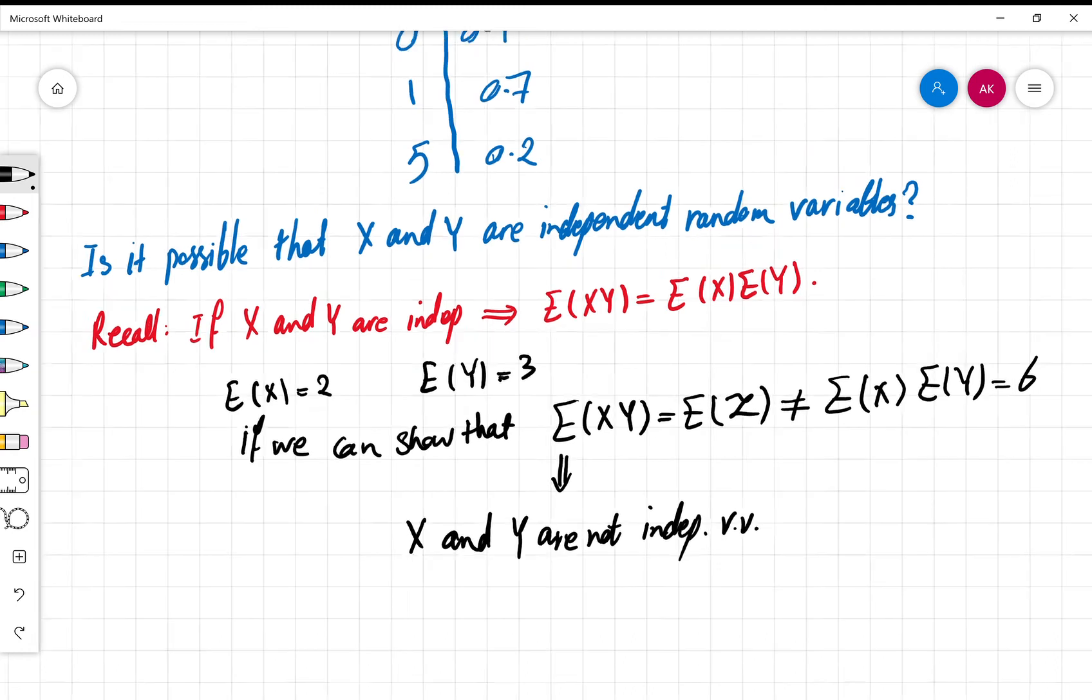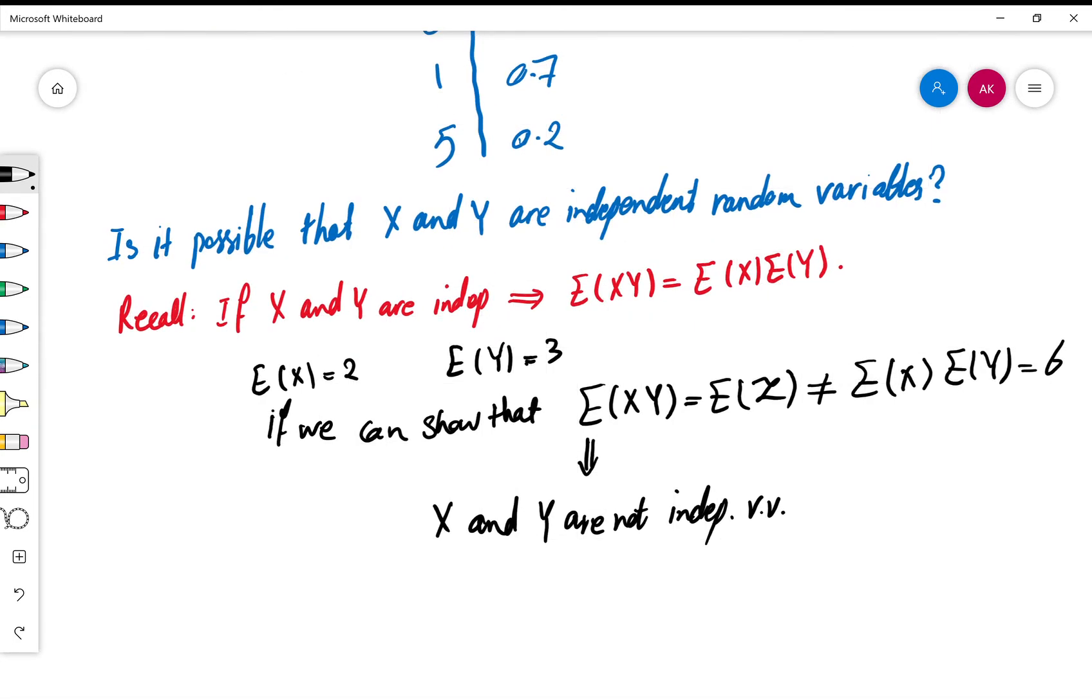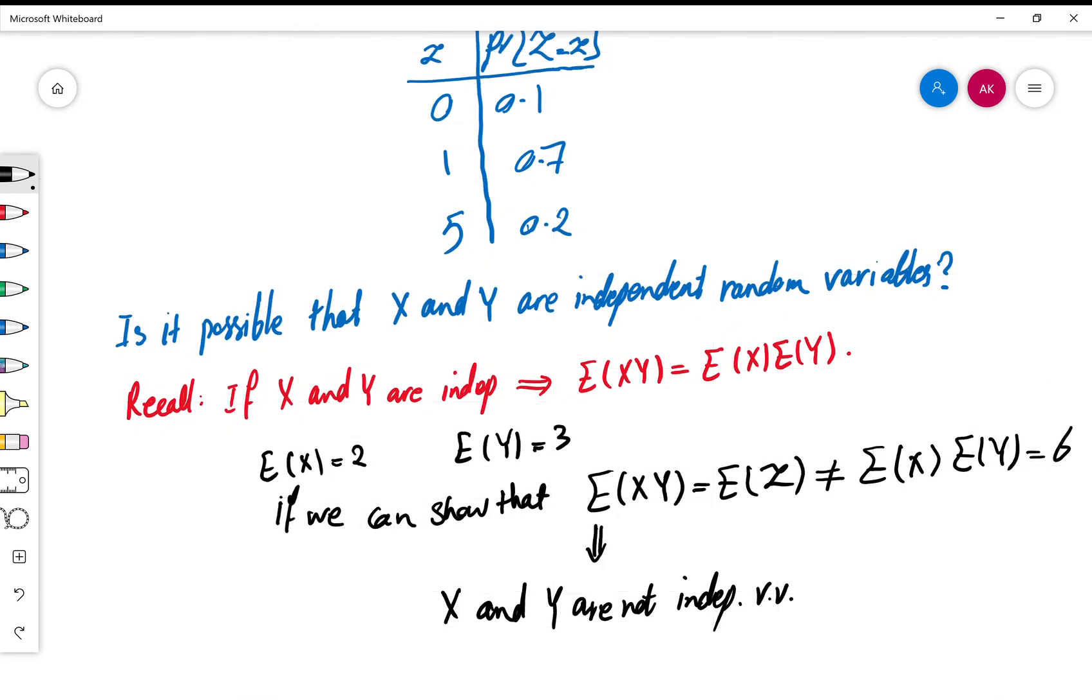Okay, in this case E(Z), the PDF is given, so E(Z) is easy to find. Multiply the value of the random variable to the probability for all three and then add them.